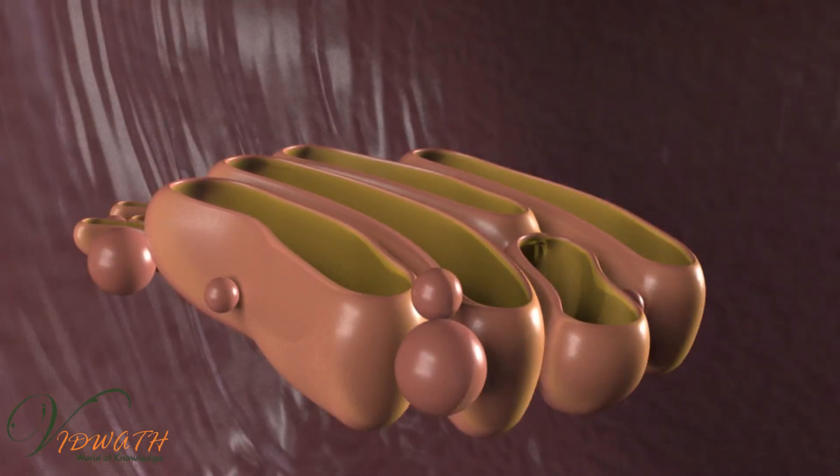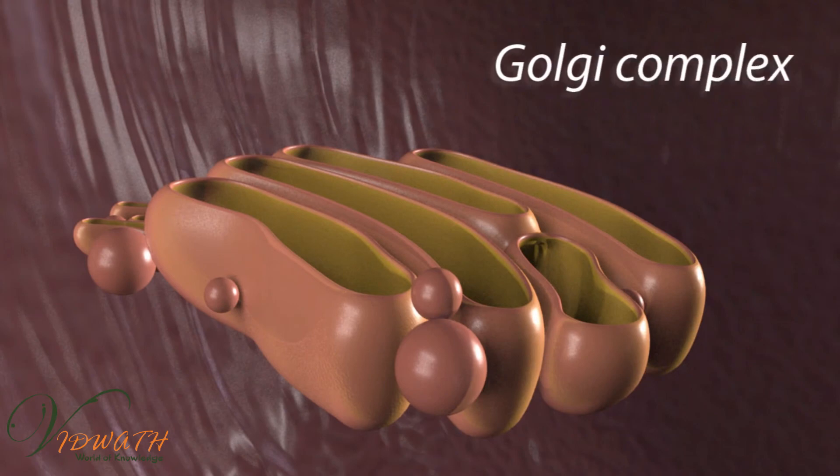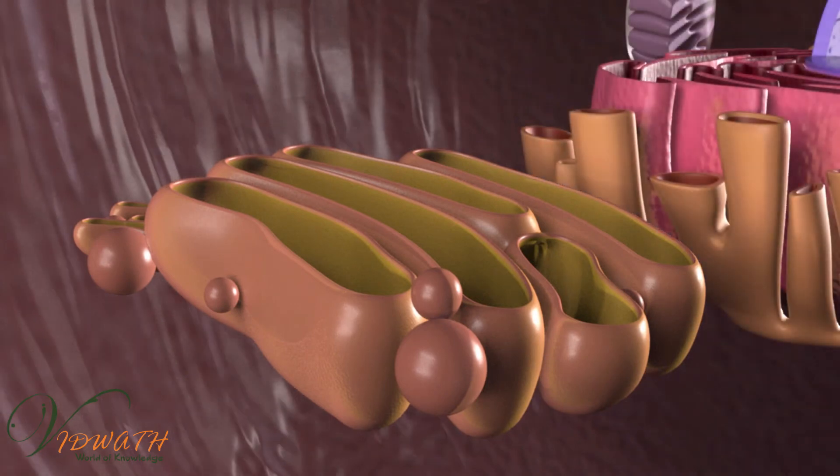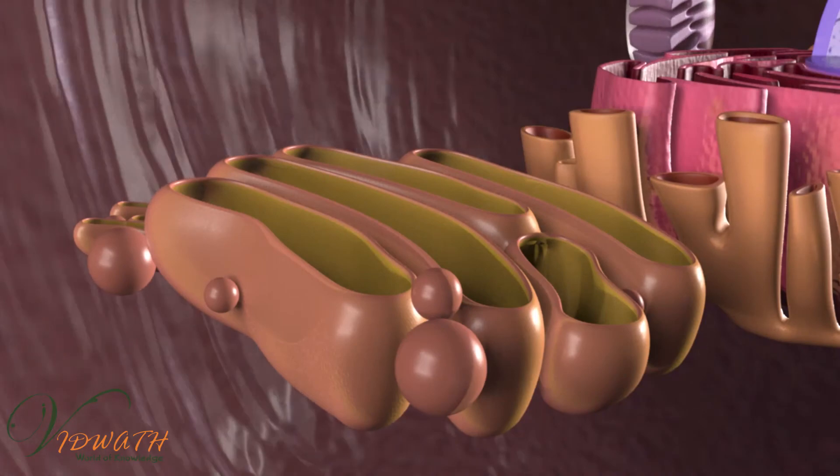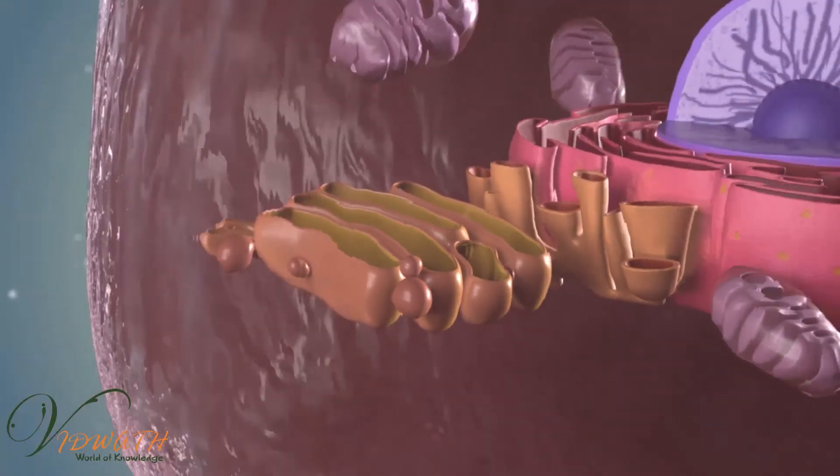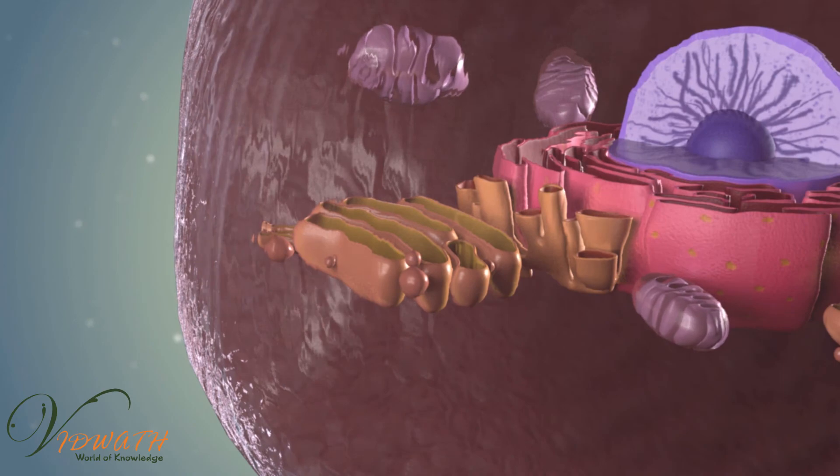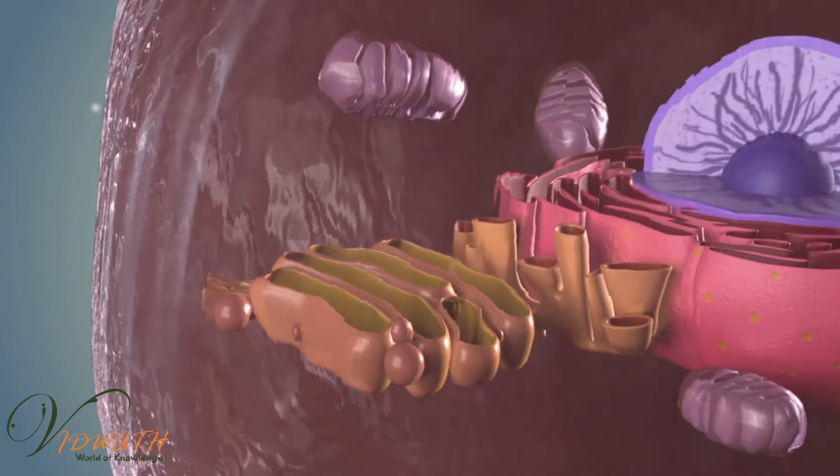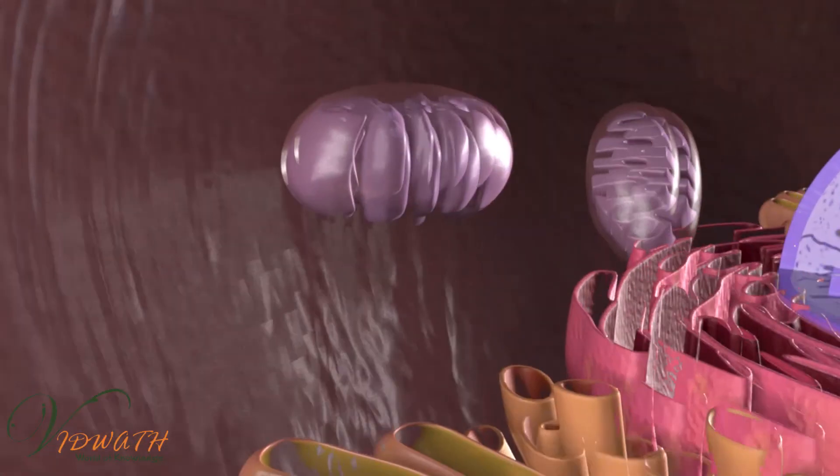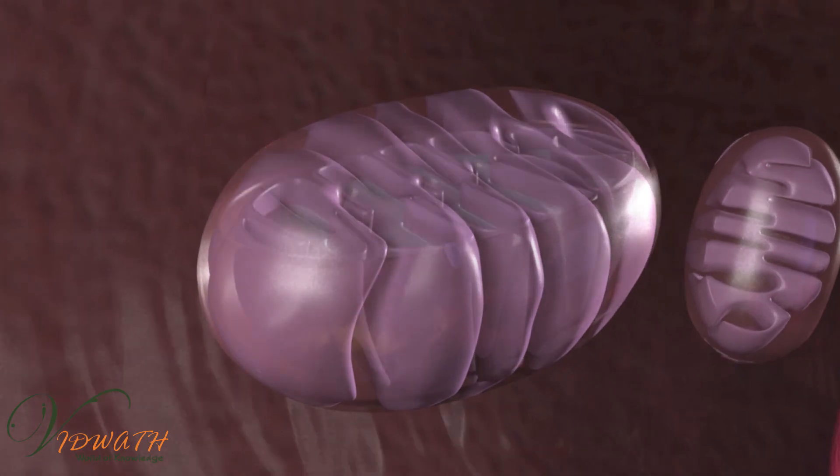The Golgi apparatus is the organelle in which proteins are modified, sorted, and sent to various parts of the cell. Modifications on the protein include but are not limited to glycosylation.